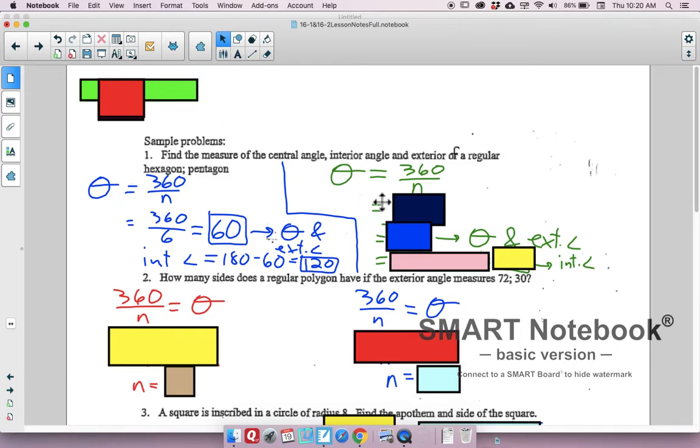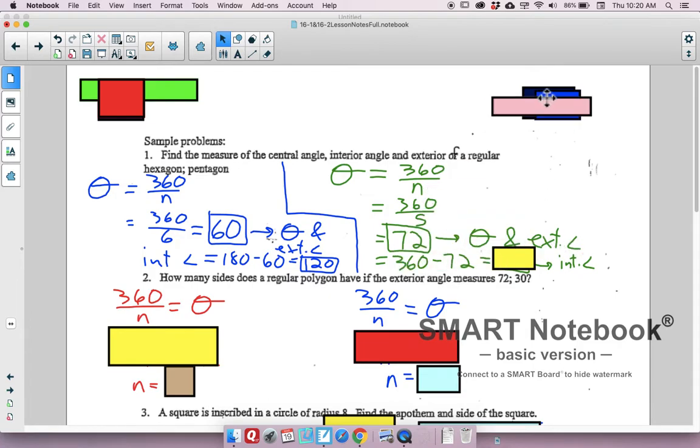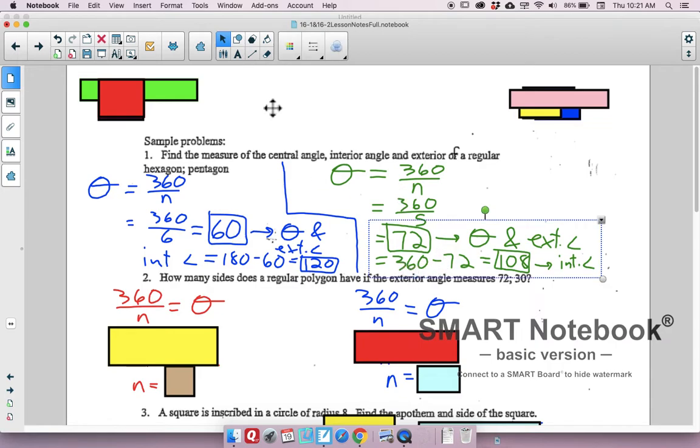For pentagon, divide by 5, and we end up getting 72, which would be the central angle and exterior angle. And, obviously, I don't know why I have 360 minus 72 there. It should be 180 minus 72. So, we can change that. Actually, let's just write over that. So, it should be 180.